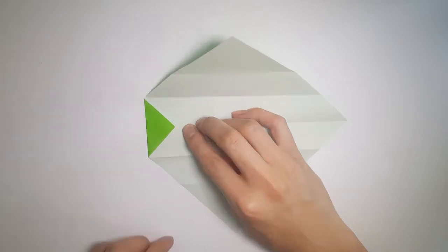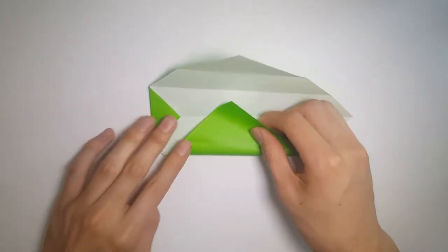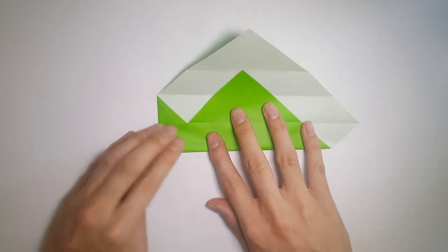Now we want to bring the bottom corner up to the top, and it shouldn't pass the small triangle you made on the left side.